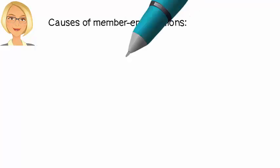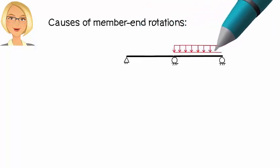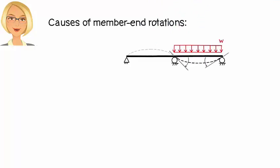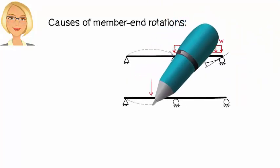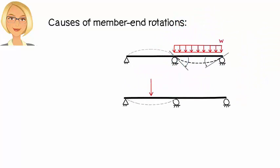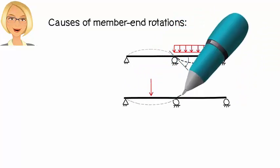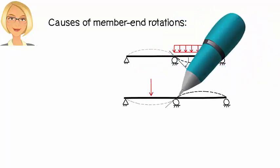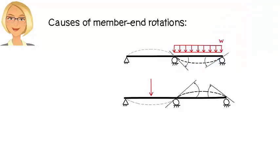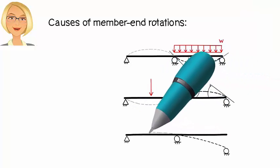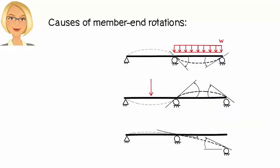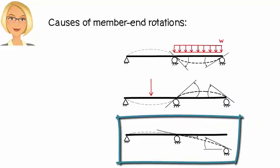There are three reasons for joint rotation in beams. One, the load directly applied to the segment causes it to deform, resulting in end rotations. Two, loads applied to adjacent segments force them to deform. These deformations, when propagated throughout the structure, result in end rotations in our member. Three, a relative vertical displacement between the ends of the member produces end rotations. It is this third reason that we want to investigate in this lecture.